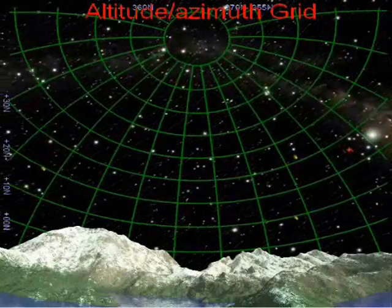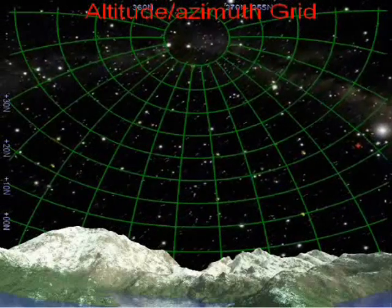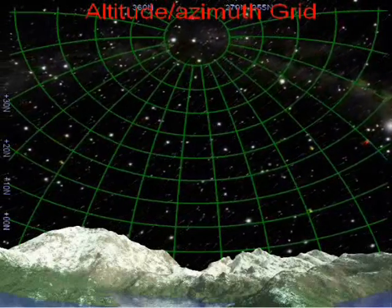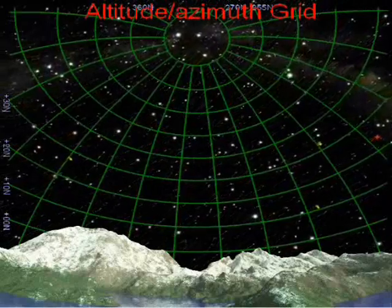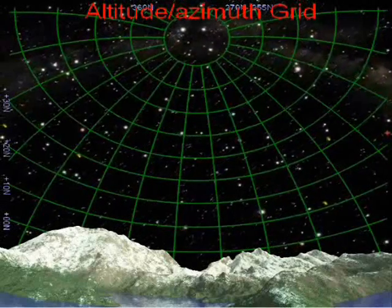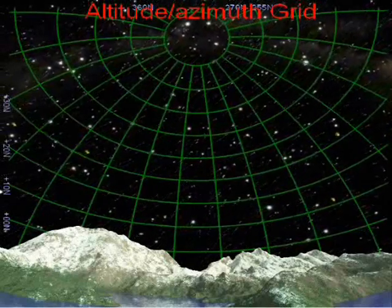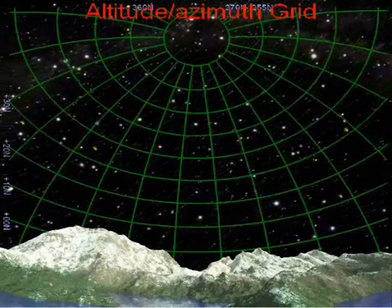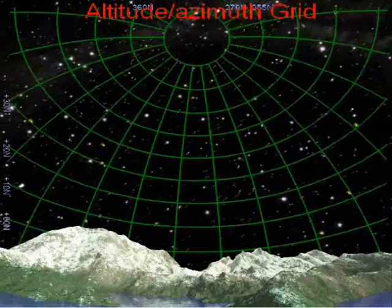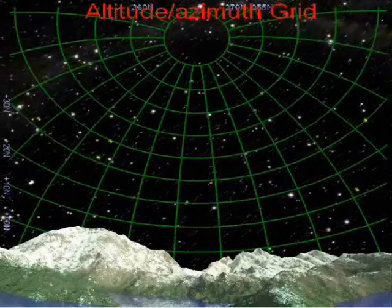In the horizon-based coordinate system, object positions in the sky are described using two coordinates: altitude and azimuth. Location description: Golden, Colorado.